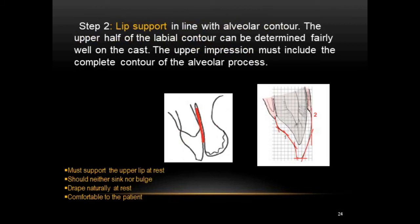Step 2 is lip support in line with the alveolar contour. The labial surface can be divided into two planes: the upper plane relates to the labial contour of the alveolus, and the lower plane relates to the functional activity of the lip. While recording the upper impression it must include the complete contour of the alveolar process so the upper half of the labial contour can be easily determined on the cast. The anterior teeth must support the upper lip at rest — it should not sink, not bulge, and should drape naturally.